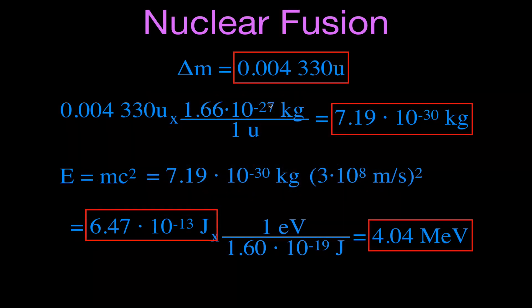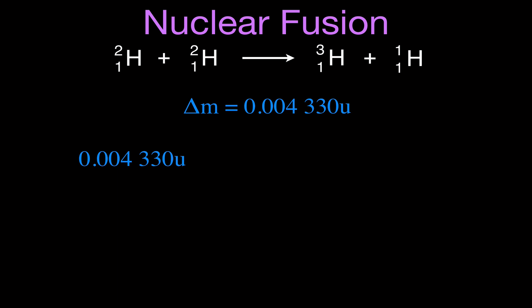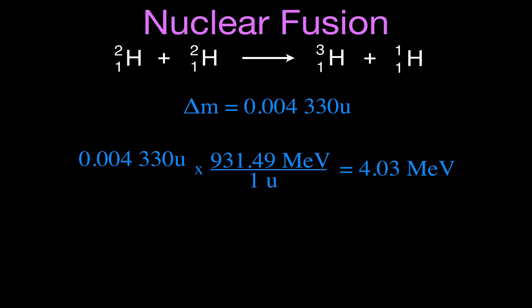We can also do that conversion more quickly: directly from unified atomic mass units to megaelectron volts, using the shortcut that one unified atomic mass unit equals 931.49 MeV. Multiplying the mass defect by 931.49 gives 4.03 MeV, which is essentially the same as 4.04 MeV — the small difference is due to rounding. That's how you convert from mass in unified atomic mass units directly to megaelectron volts.